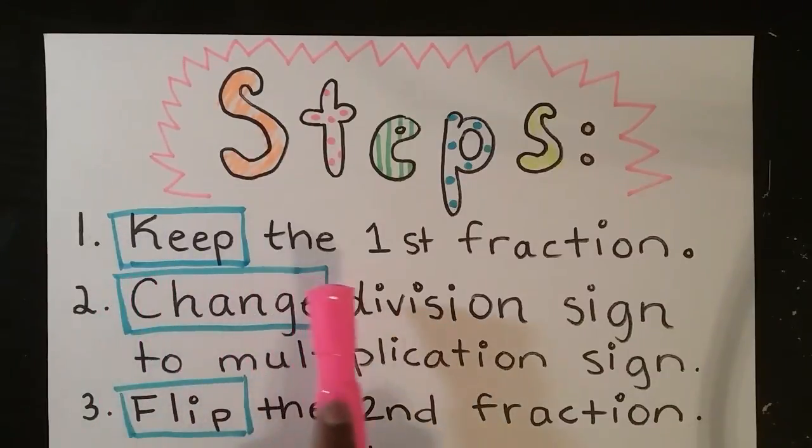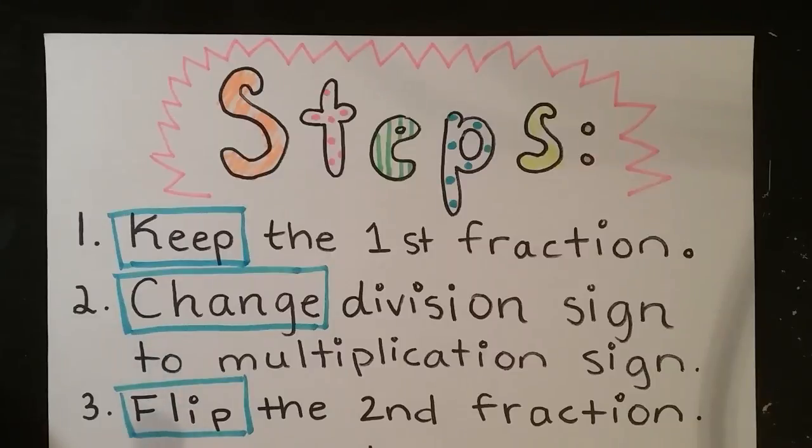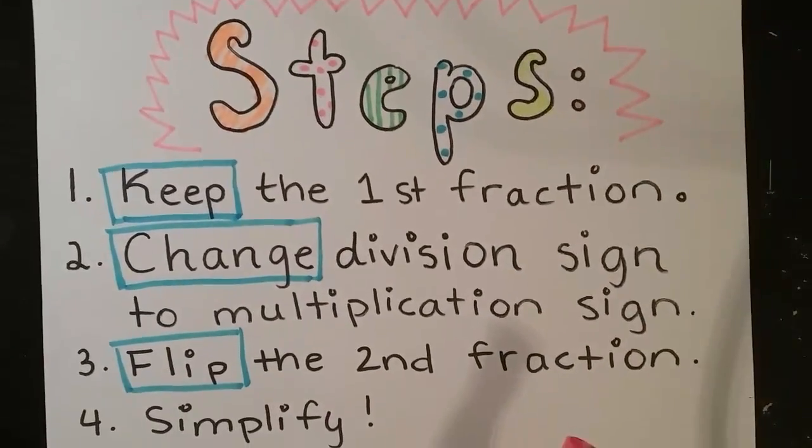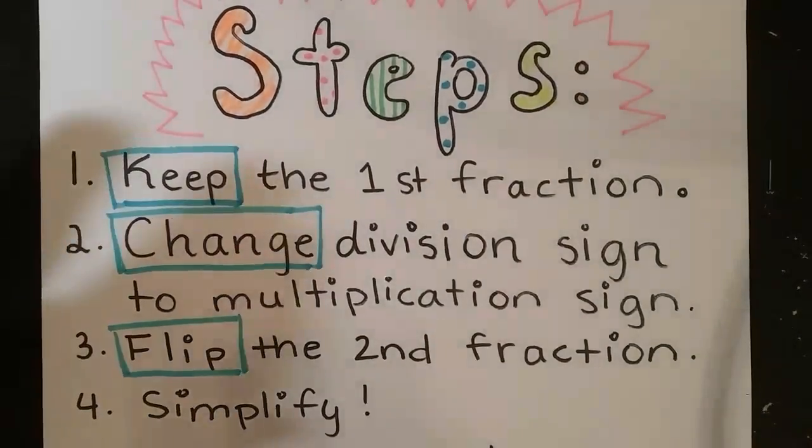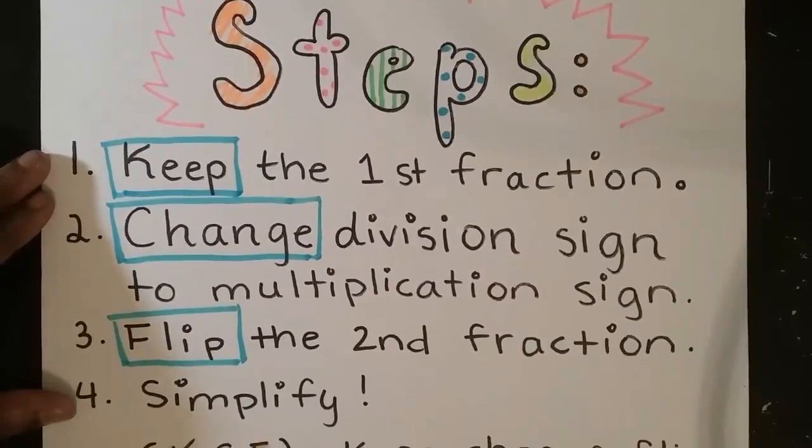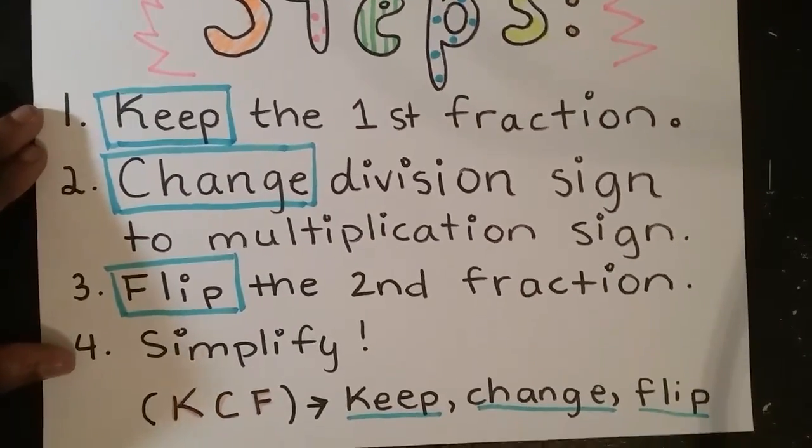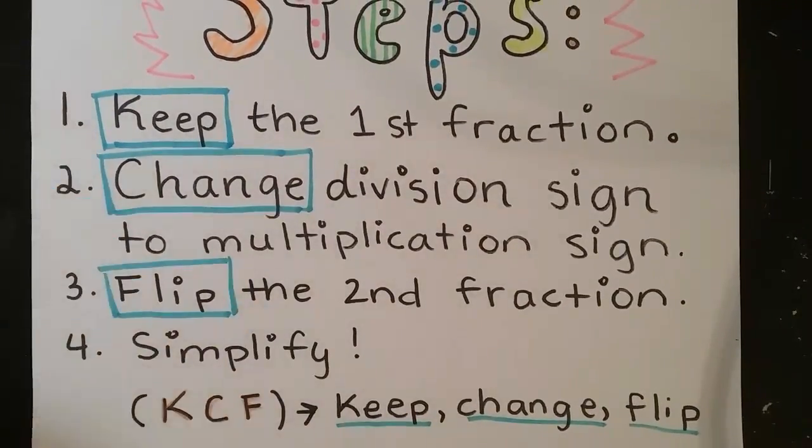First, we have to keep the first fraction the same. Then we want to change the division sign to a multiplication sign. And then we flip our second fraction. And we can't forget to simplify. The acronym KCF, or keep, change, flip, can help us to remember the steps.